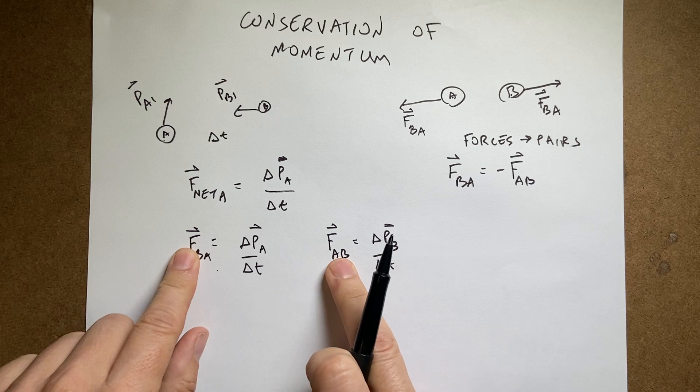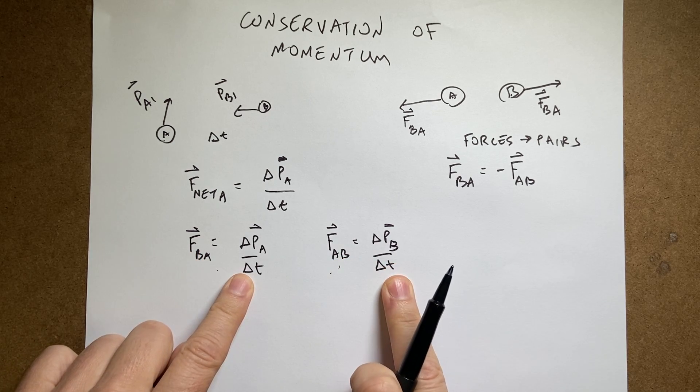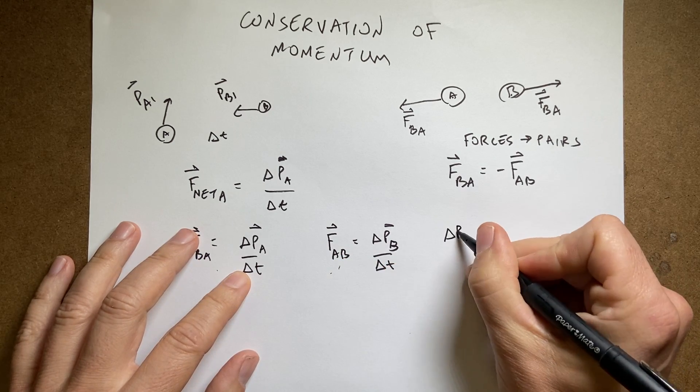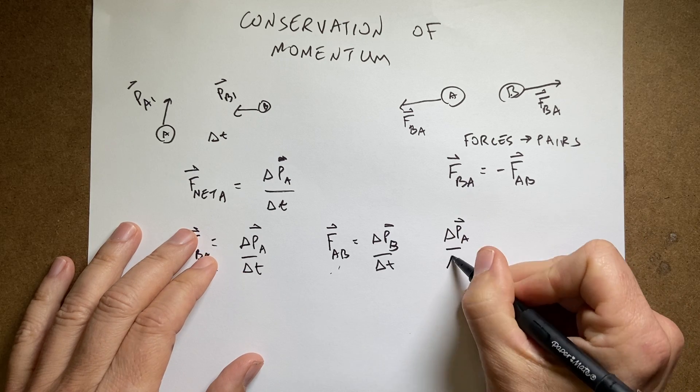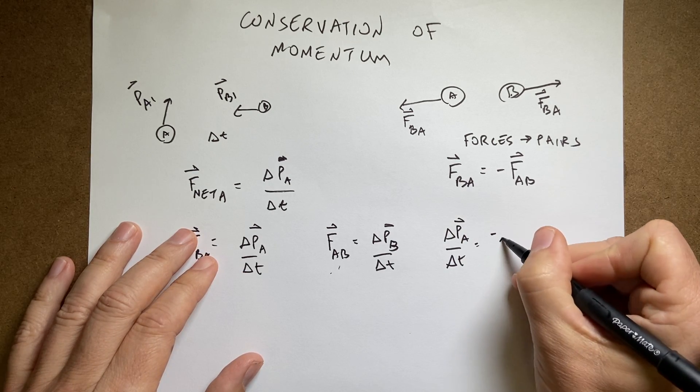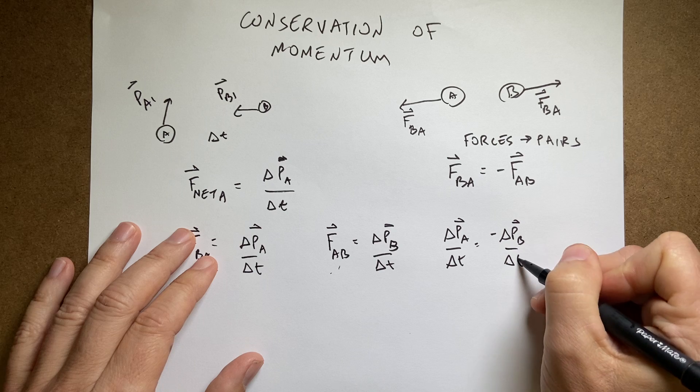These two, if these are opposite of each other, these two must be opposite of each other. So, delta PA over delta T equals negative delta PB over delta T.